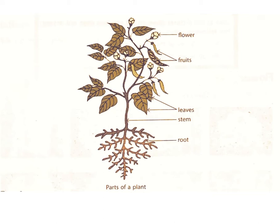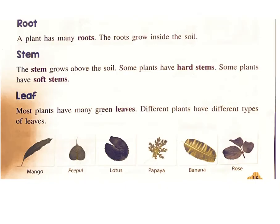Root: A plant has many roots. The roots grow inside the soil. Stem: The stem grows above the soil. Some plants have hard stems and some plants have soft stems.